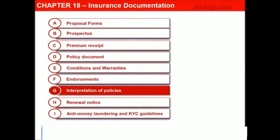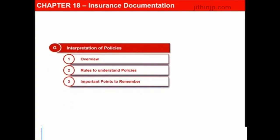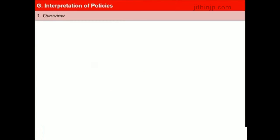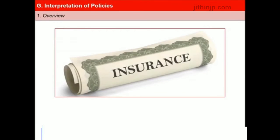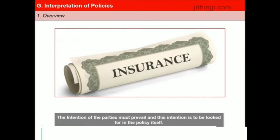Contracts of insurance are expressed in writing and the insurance policy wordings are drafted by the insurers. These policies have to be interpreted according to certain well-defined rules of construction or interpretation which have been established by various courts. The most important rule of construction is that the intention of the parties must prevail, and this intention is to be looked for in the policy itself. If the policy is issued in an ambiguous manner, it will be interpreted by the courts in favour of the insured and against the insurer, on the general principle that the policy was drafted by the insurer.